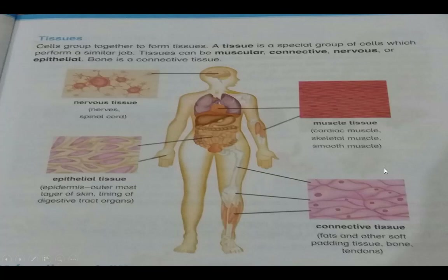A tissue is a special group of cells which perform a similar job. Tissues can be muscular, connective, nervous, and epithelial. These are the four kinds of tissues.